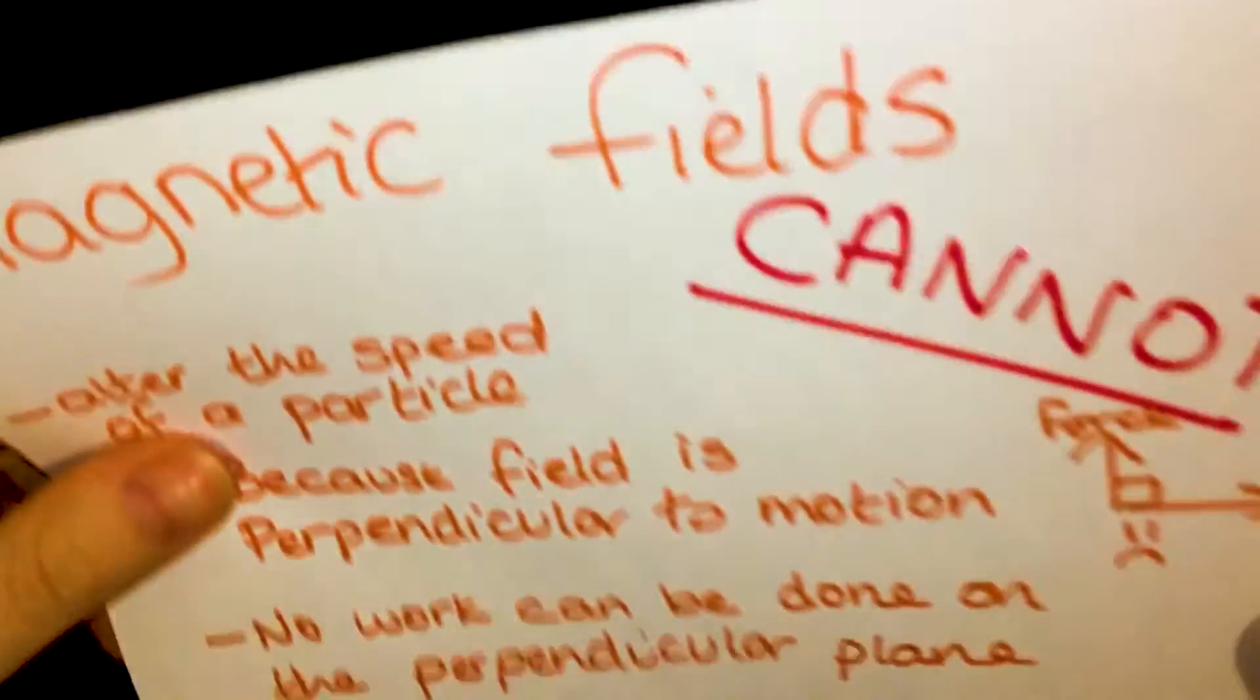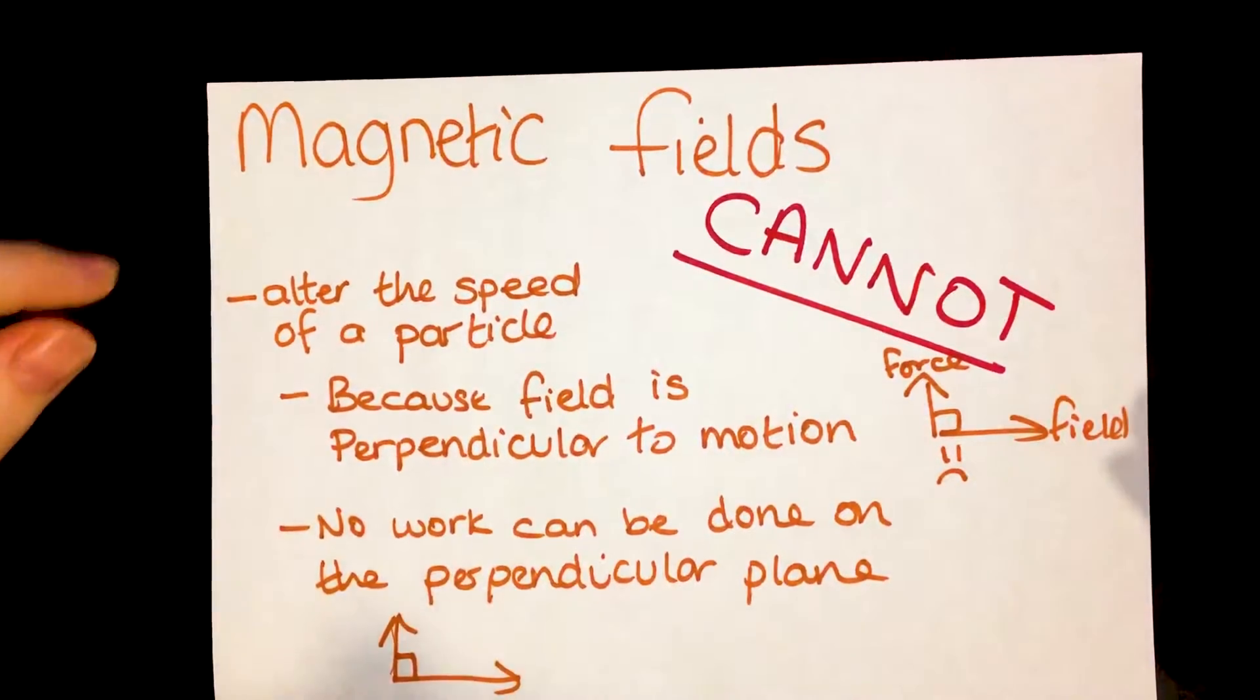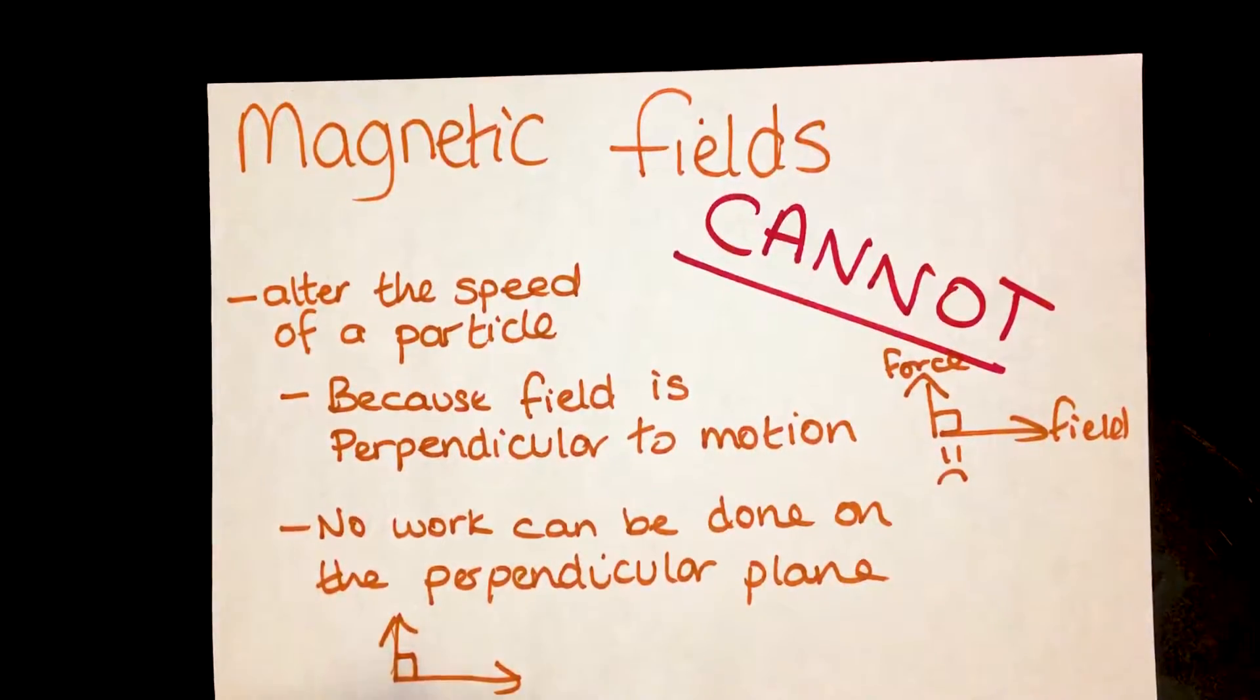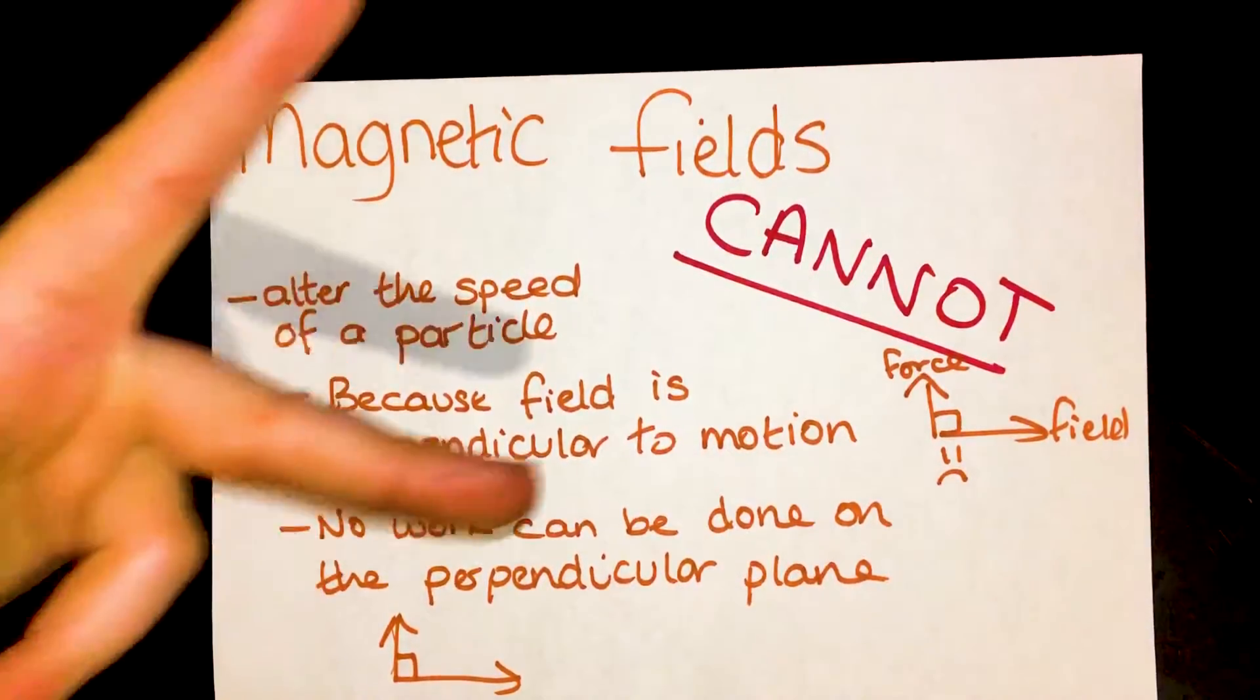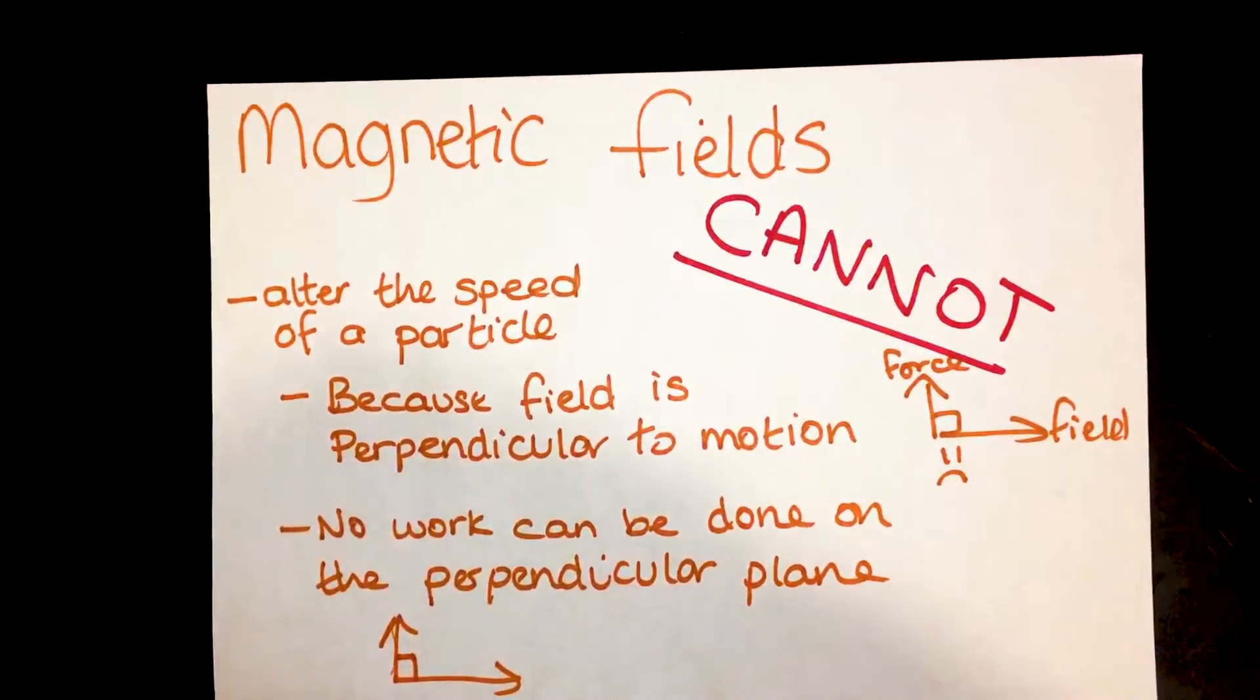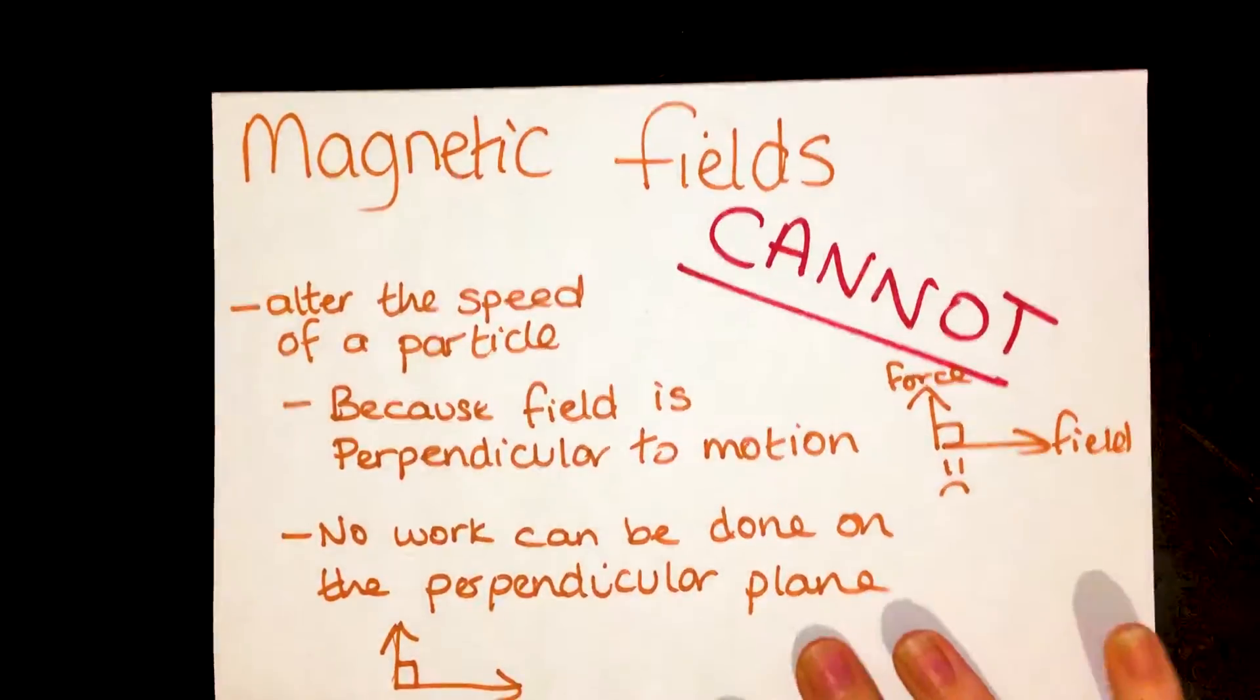Now some key points about magnetic fields, just as a very quick recap. Magnetic fields cannot alter the speed of a particle because their field is perpendicular to the force. If you look at using your left-hand rule, see our previous videos if you don't quite understand that. Because the field is perpendicular to force, no work can be done on a perpendicular plane, which means a magnetic field cannot alter speeds of particles.